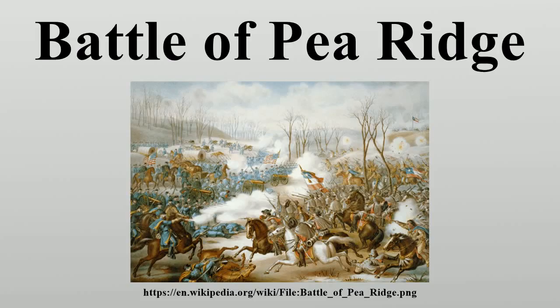United States forces, led by Brigadier General Samuel Curtis, moved south from central Missouri, driving Confederate forces into northwestern Arkansas. Major General Earl Van Dorn launched a Confederate counter-offensive, hoping to recapture northern Arkansas and Missouri.